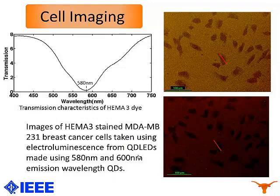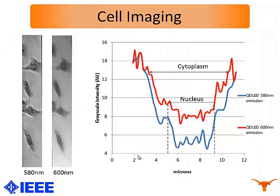We showed preliminary results of cell imaging, which is our final application. In this case we used breast cancer cells, which were MDA cells, stained with Hema 3 dyes, and they were fixed on a cover slip. The cover slip was kept on top of our LEDs, and we imaged using a fluorescence microscope without any filters, with our LEDs as the excitation source. On the left we can see a figure of the transmission spectrum of the Hema 3 dye, which shows minimum transmission at 580 nanometers. Because of this, we expect to see higher absorption in the nucleus from the 580 nanometer LED as compared to the 600 nanometer LED. On the left are figures taken with 580 and 600 nanometer LEDs on a black and white CCD camera, and on the right we see that the nucleus absorption from the 580 nanometers is much higher than the absorption of the nucleus from the 600 nanometer LED.